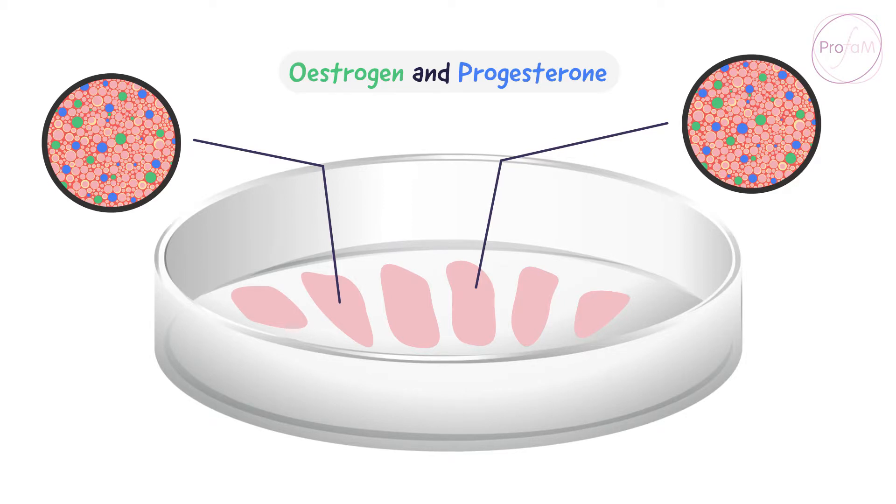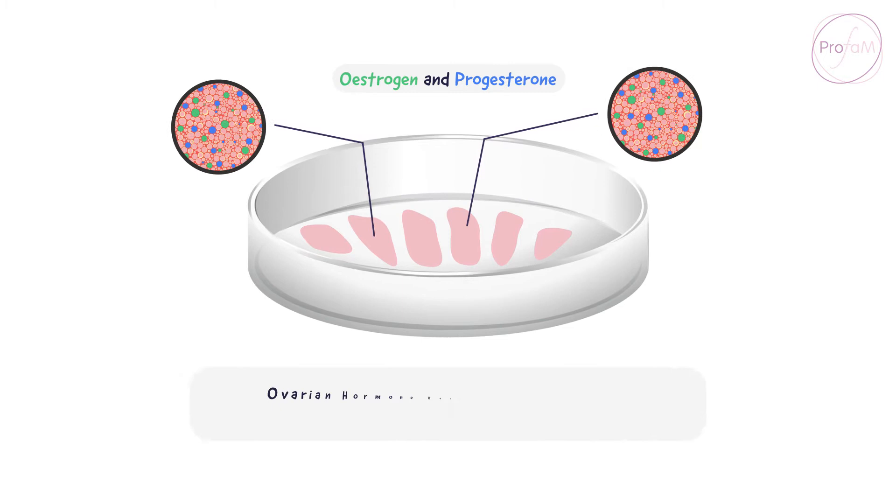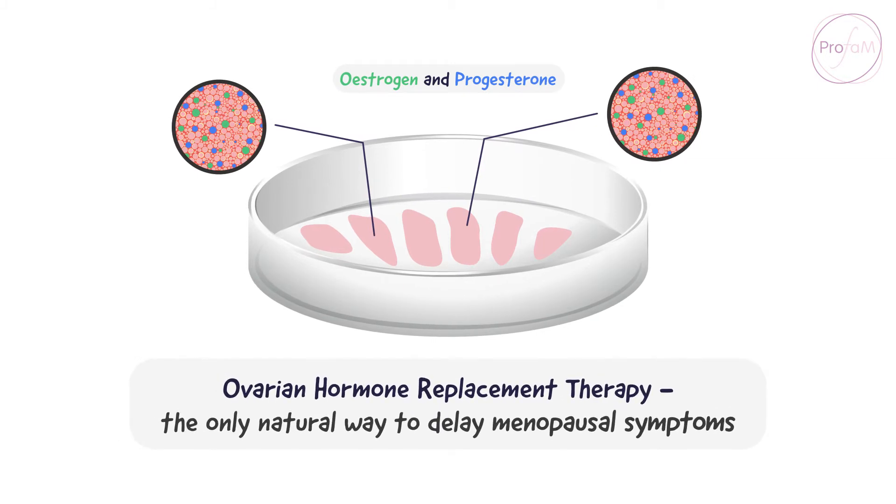to continue her own production of hormones, and delaying the menopausal symptoms, a physiological and therefore totally natural HRT, the only natural way to delay menopausal symptoms.